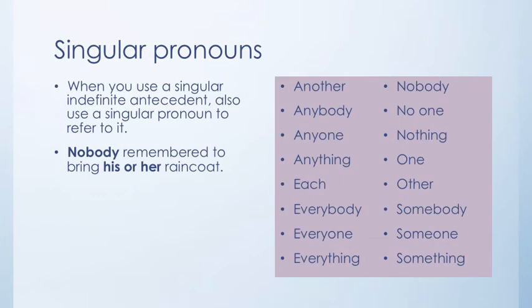The singular indefinite pronoun: when you use a singular indefinite antecedent, also use a singular pronoun to refer to it. For example, nobody remembered to bring his or her raincoat. Nobody is singular, so you use his or her to refer back to it. A list of singular indefinite pronouns includes: another, anybody, anyone, anything, each, everybody, everyone, everything, nobody, no one, nothing, one, other, somebody, someone, and something.